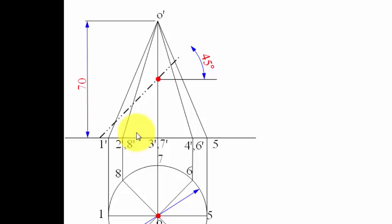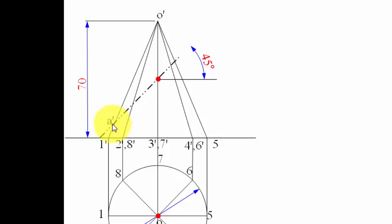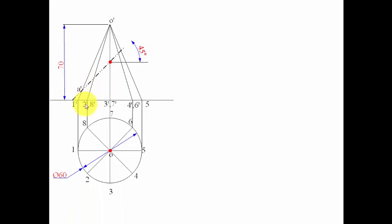The cutting plane intersects the generators at different points. Generator O-dash 1-dash has only one cutting point: A. The line representing generators O2 and O8 gives two cutting points: C and D.